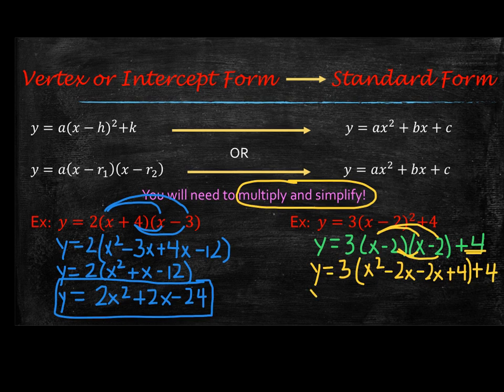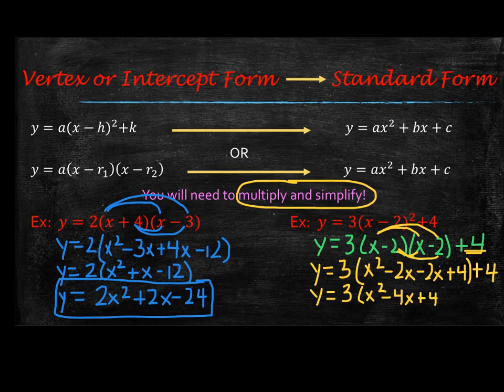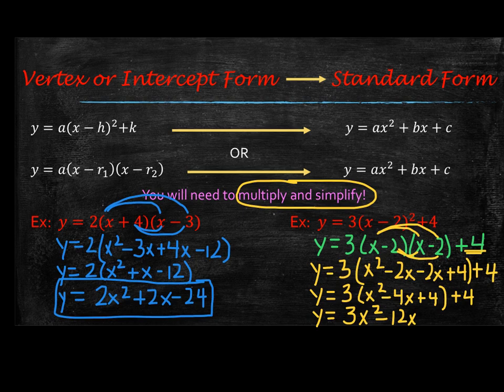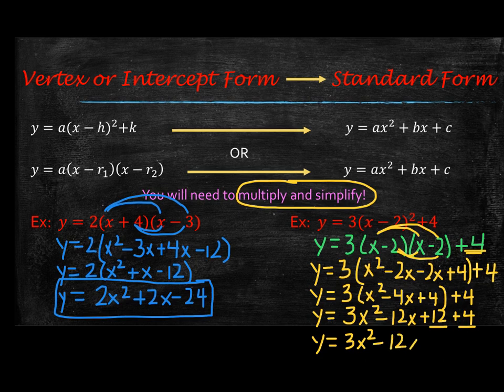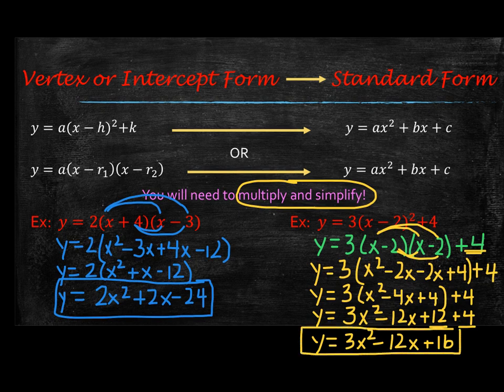Let's go ahead and combine our like terms. So we have y equals 3 parentheses x squared minus 4x plus 4. And then plus 4 on the outside. Distribute the 3. Y equals 3x squared. Then you would have a minus 12x. And then you would have a plus 12. And then I would want to add the 4 on to the end. And then now collect your like terms there at the end. So you have y equals 3x squared minus 12x plus 16. And there you have it, it is in standard form.